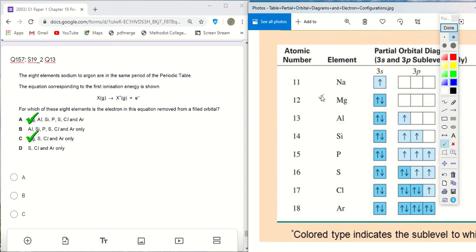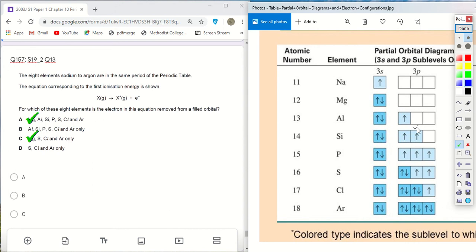Okay. Then let's look at aluminum. Aluminum, the first electron is removed from a 3p orbital. And that, this 3px orbital is not filled because there is only one. So aluminum cannot be the answer.